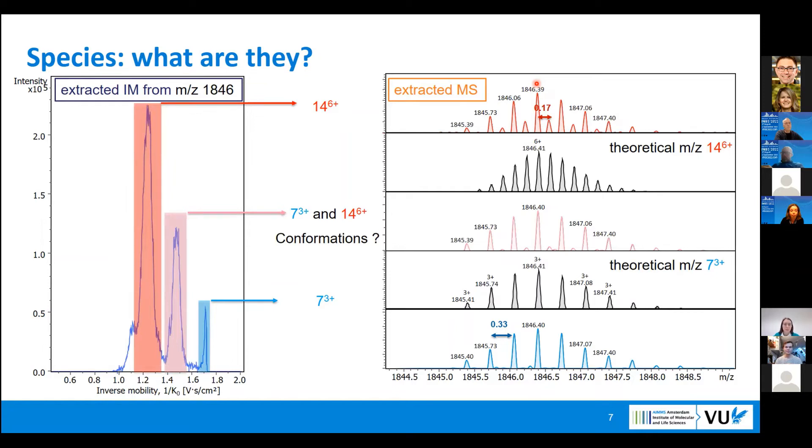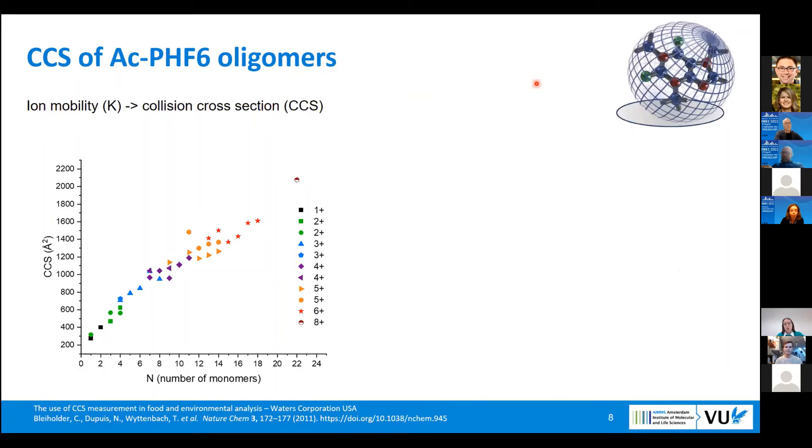To have information about what are the ions and what are their conformations, we need to go to collision cross section, and we can calculate it from the ion mobility. Here is an example of oligomers formed in case of acetyl-capped peptide. On the X-axis, I showed number of monomers within the oligomer unit and their CCS values on the Y-axis. All these points show different charge states.